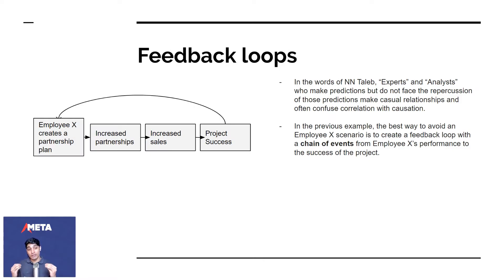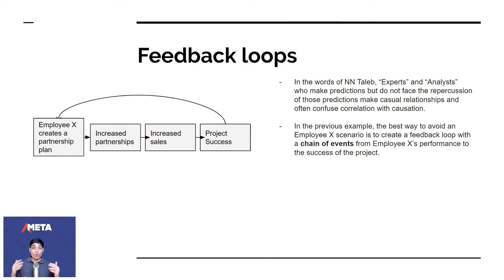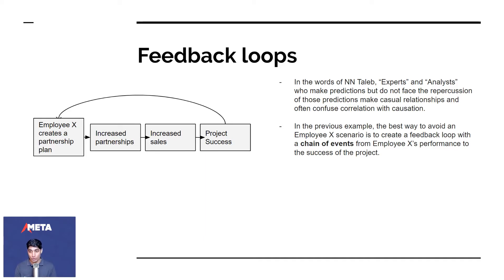Most companies have the idea of a feedback loop. As Taleb says, experts and analysts who make predictions but do not face the repercussions of those predictions make casual relationships and often confuse correlation with causation. If you're a third party studying this at an MBA course, completely distanced from a situation where an employee was on five projects and all five failed, most people would say that's a bad employee. But if you're very close to the situation, maybe all five projects were really hard, or in a time of recession, or in a bad market where nobody else won either.